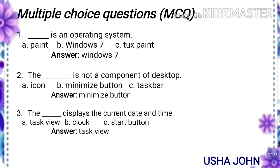Second one: the dash is not a component of a desktop. Options: icon, minimize button, taskbar. Answer: minimize button is not a component of the desktop. Third one: the dash displays the current date and time.